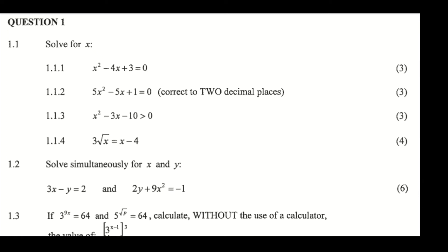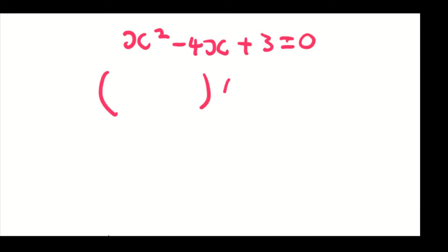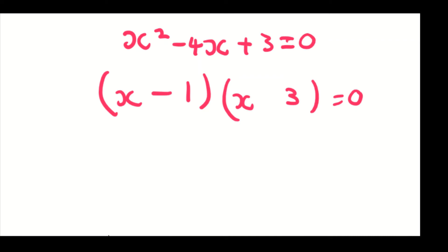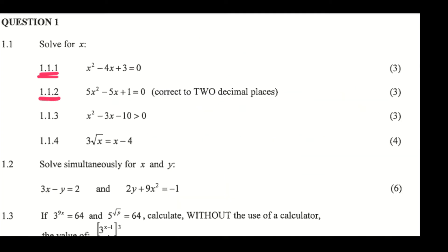We're going to do question 1, starting with 1.1.1. We have x squared minus 4x plus 3 equals 0. The first step is to factorize. The factors of x squared are x and x, and the factors of 3 that give us the middle term are 3 and 1 — both negative. So we get x minus 1 equals 0 or x minus 3 equals 0, giving x equals 1 or x equals 3.